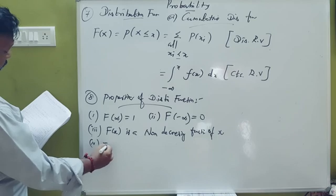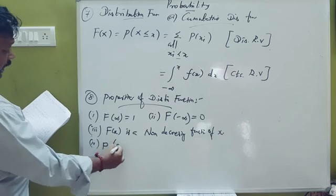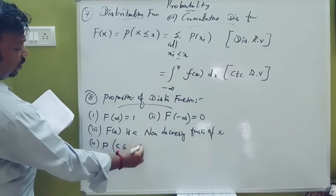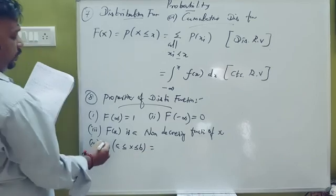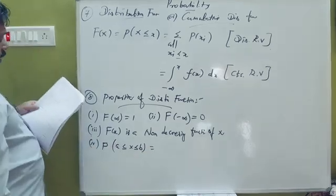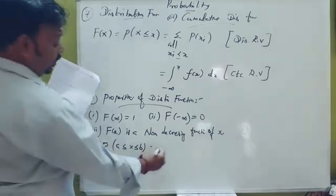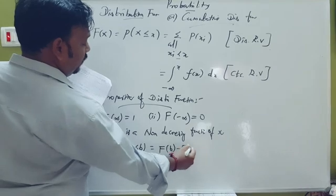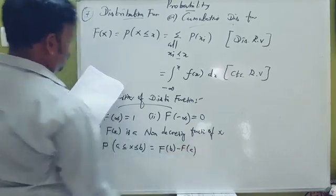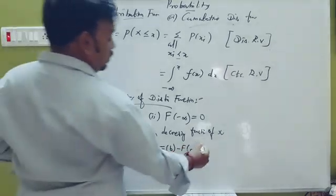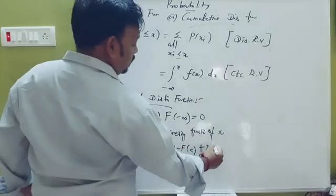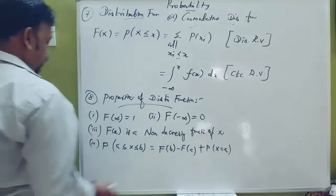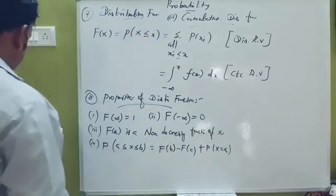The fourth property: the probability that a is less than or equal to x less than or equal to b equals F of b minus F of a. You can apply this formula directly.